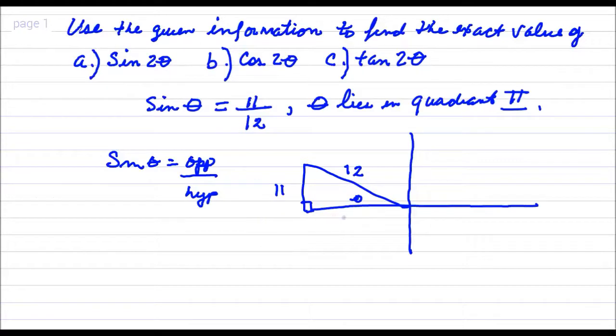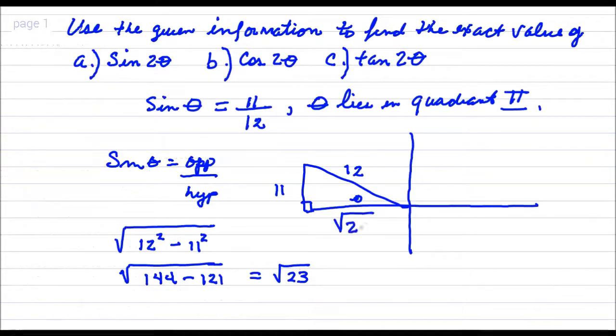And we can find that third side by taking the square root of the hypotenuse squared and subtracting the opposite side squared. So that becomes the square root of 144 minus 121. That is the square root of 23. And the square root of 23 goes right here.